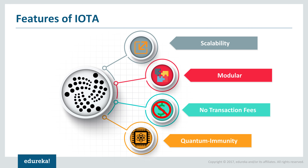The next feature is modularity. The IOTA protocol is lightweight and easy, but through modularity they have not compromised on parallel functioning capabilities. Each component associated with the IOTA platform can work independently without compromising the overall functionality or speed of the system.